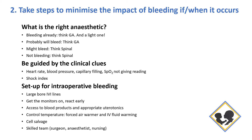Set up for intraoperative bleeding, particularly in the high-risk patient. That means a good large-bore IV line — at least a gray, sometimes two. Get the monitors on and react to what they're telling you early. Get access to blood products and appropriate uterotonics. Try to control the theater temperature; use a forced air warmer and warmed IV fluids in every patient if you can, but particularly in the bleeding patient. If you have cell salvage, have it in the room and try to know how to operate it before you need to. Get your most skilled team into theater if you can.